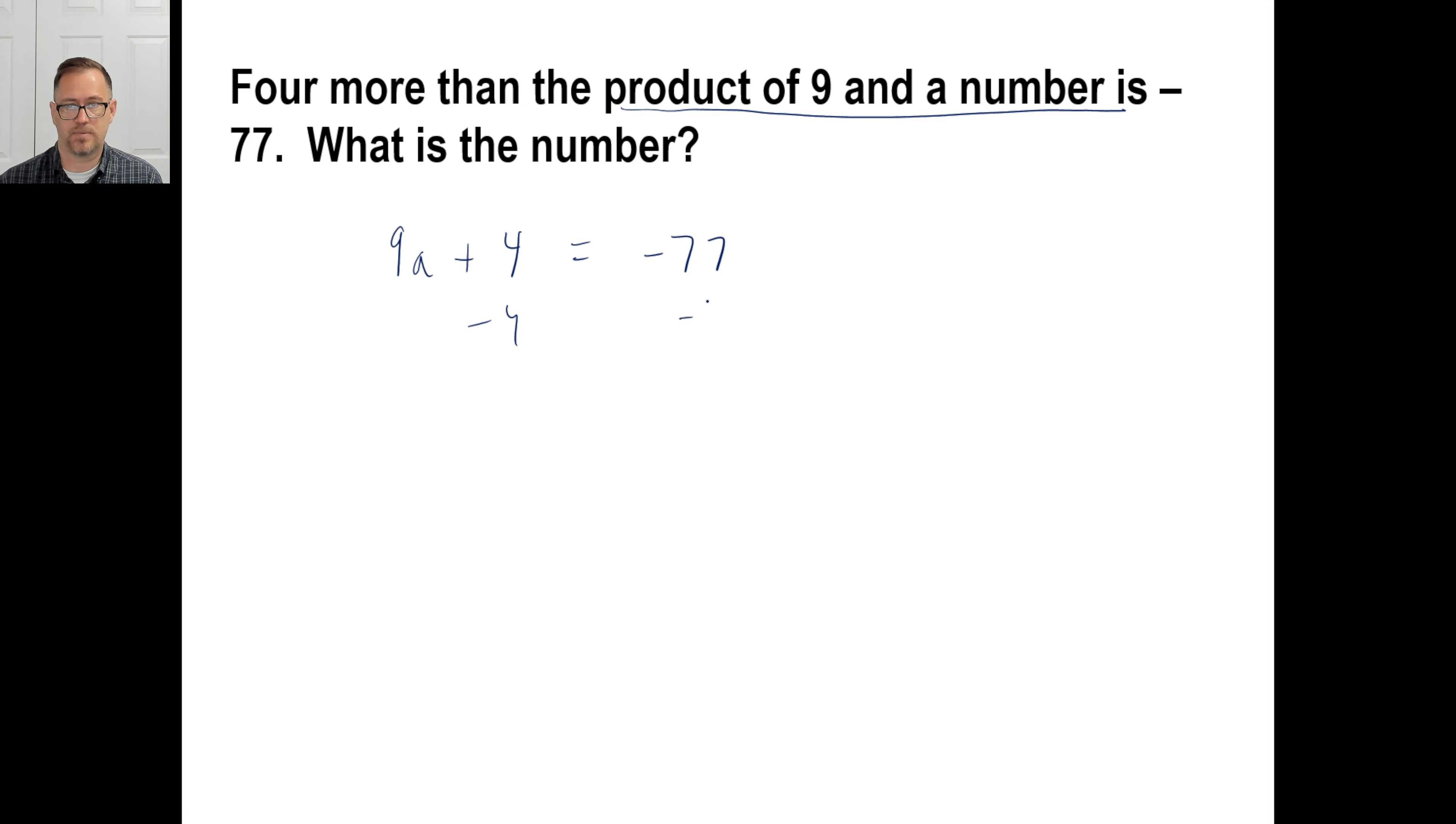So I subtract four. Subtract four. 9A equals negative 81. I'll divide by nine. What is negative 81 divided by positive nine? And the answer is, of course, negative nine. There we go.